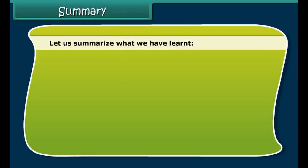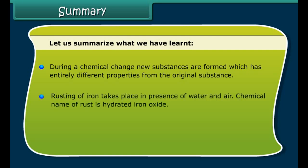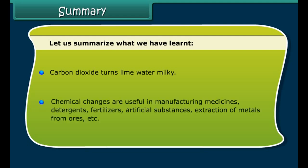During a chemical change, new substances are formed which have entirely different properties from the original substance. Rusting of iron takes place in the presence of water and air; the chemical name of rust is hydrated iron oxide. On dissolution of magnesium oxide in water, magnesium hydroxide is formed, which is basic in nature. Carbon dioxide turns lime water milky. Chemical changes are useful in manufacturing medicines, detergents, fertilizers, artificial substances, and extraction of metals from ores.